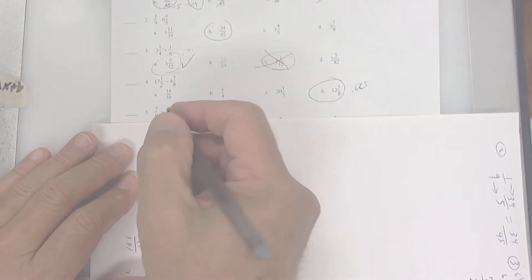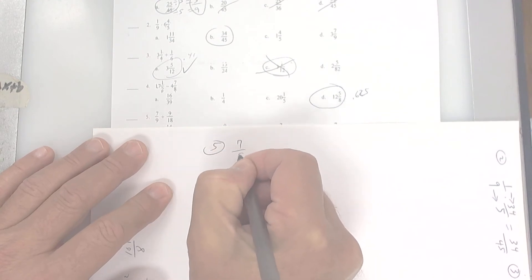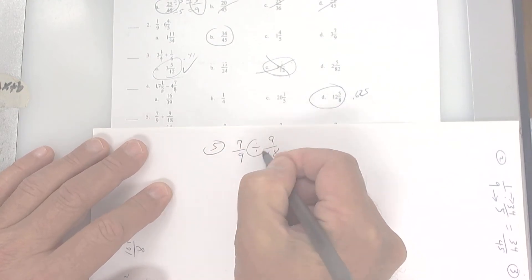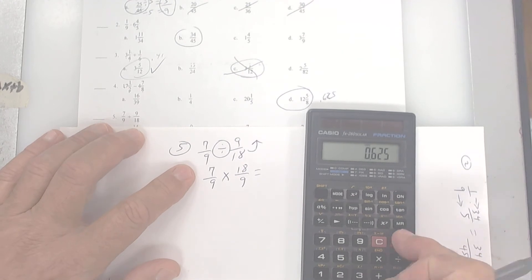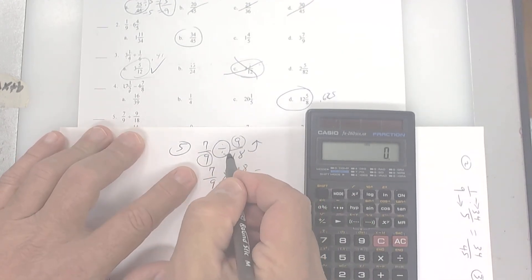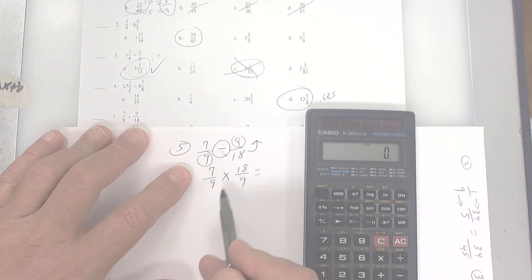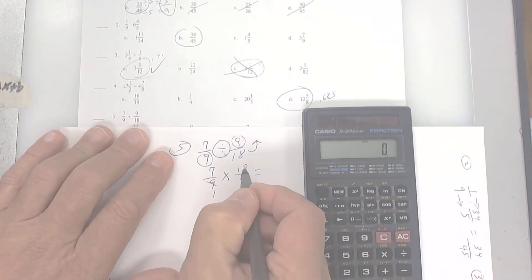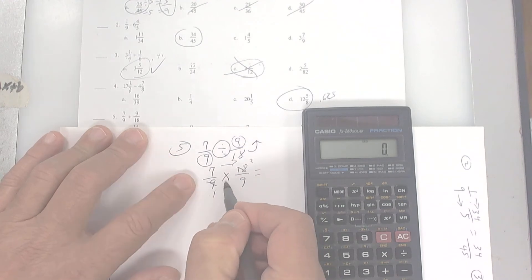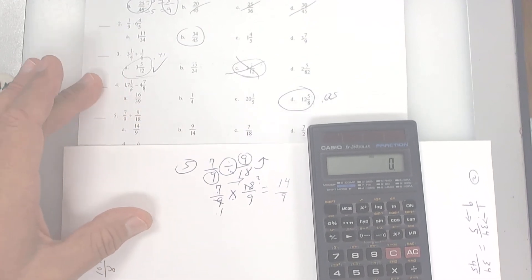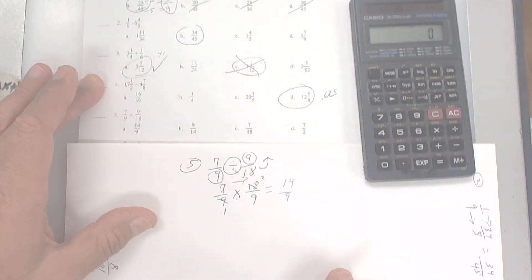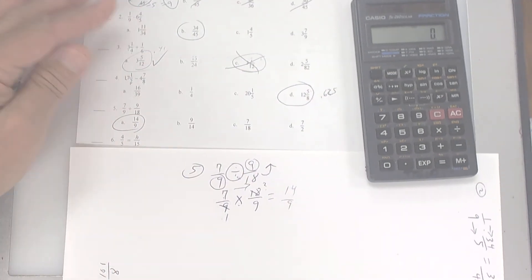This one is division. So for number 5, it's 7 over 9 divided by 9 over 18. Remember, when you divide, you've got to flip it first. So it's going to be 7 over 9. And then you've got to change it, flip change. So this becomes 18 over 9. So I clear my calculator. Look, if you reduce this, you're going to miss it. Remember, you can't reduce when it's division. You can reduce here. 9 goes into 9 once, 9 goes into 18, 2. When you multiply, you can reduce. 7 times 2 is 14 over 9. So that's going to be 1 and 5 over 9. Let's see if they have that. 14 over 9 is the way they left it.